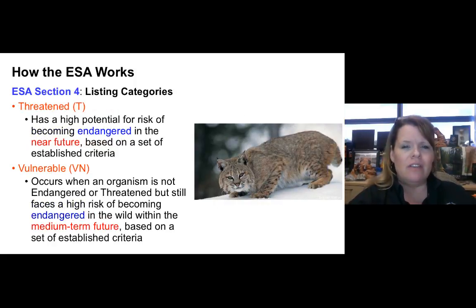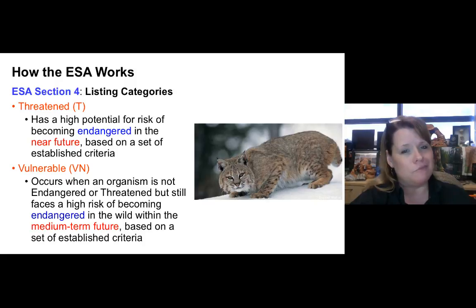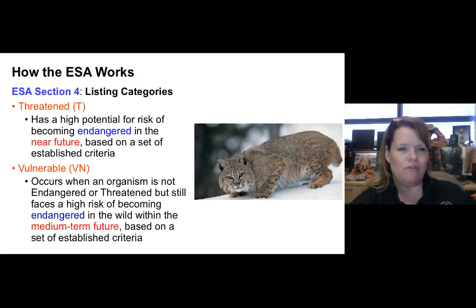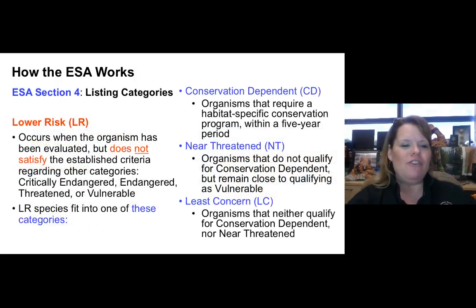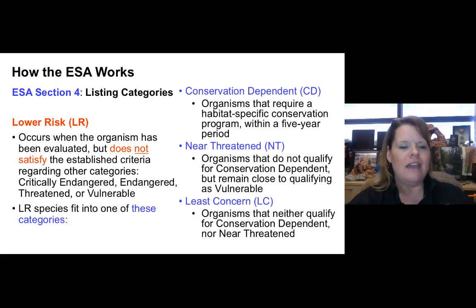VU — vulnerable — occurs when an organism is not endangered or threatened but still faces a high risk of becoming endangered in the wild within the medium-term future. LR — lower risk — applies when an organism has been evaluated but doesn't satisfy criteria for critically endangered, endangered, threatened, or vulnerable. Lower risk has three sub-tiers: CD (conservation dependent) — requires a habitat-specific restoration program within a five-year window; NT (near threatened) — close to qualifying as vulnerable; and LC (least concern) — doesn't qualify for any other category.